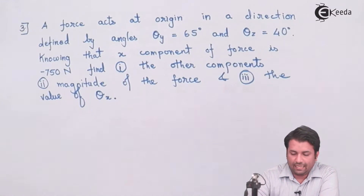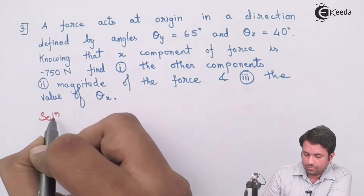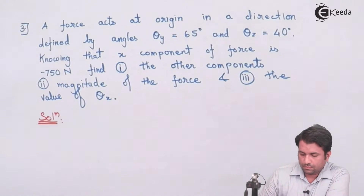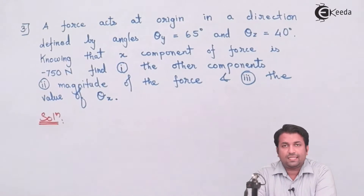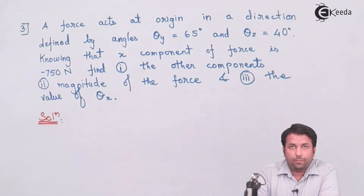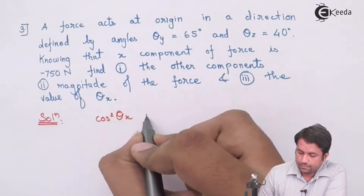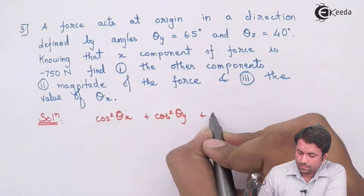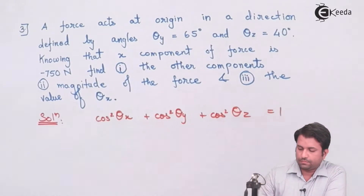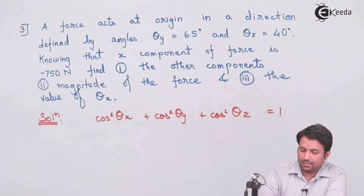We need to find the magnitude of the force and the value of theta_x, the angle with respect to the x-axis. The identity that is very important in this case is: cos²θ_x + cos²θ_y + cos²θ_z = 1. Using this identity, I can find the angle with respect to the x-axis.